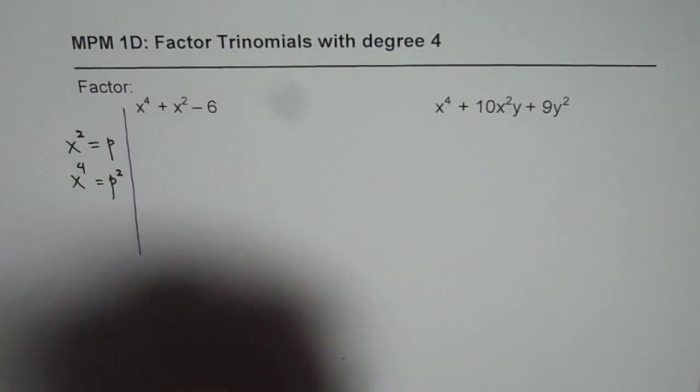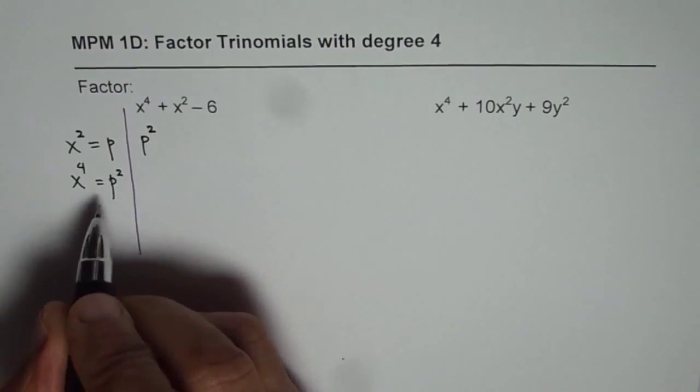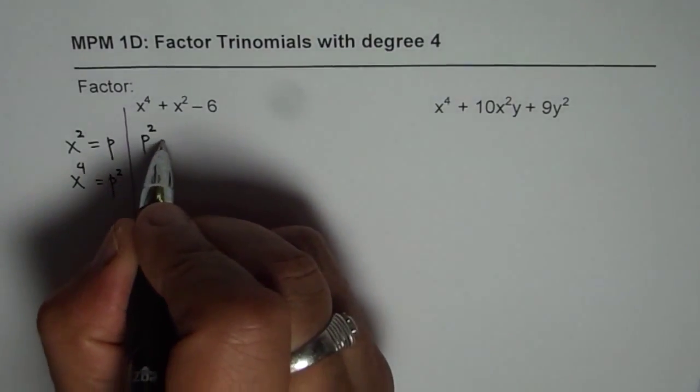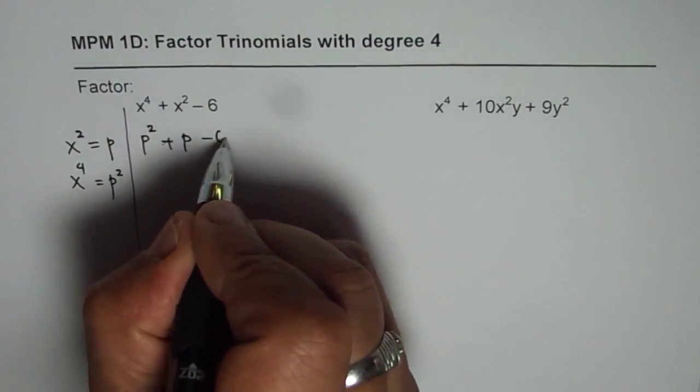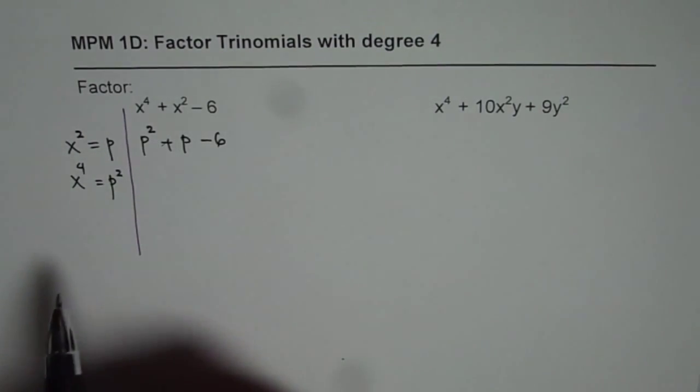So I get p² + p - 6, this is what I get. Now that is a trinomial which we know how to factor.